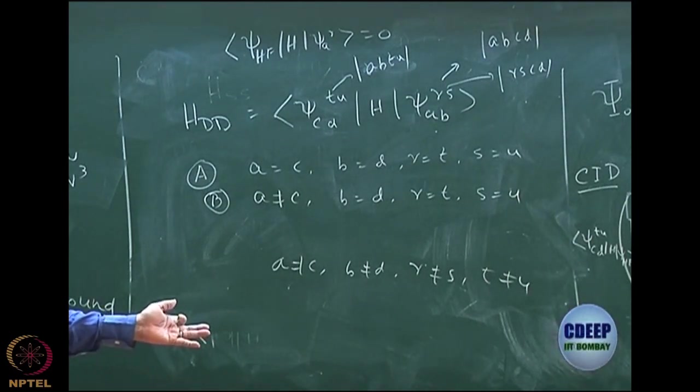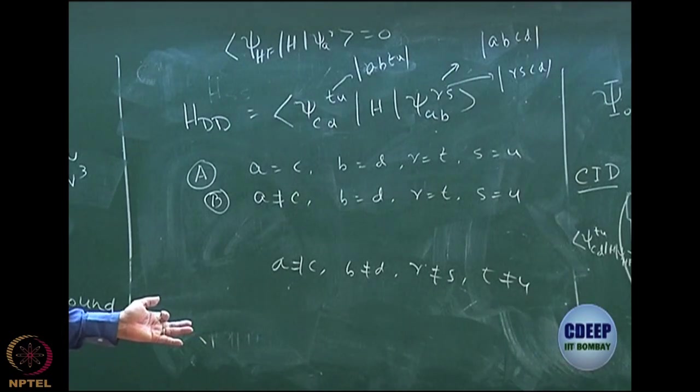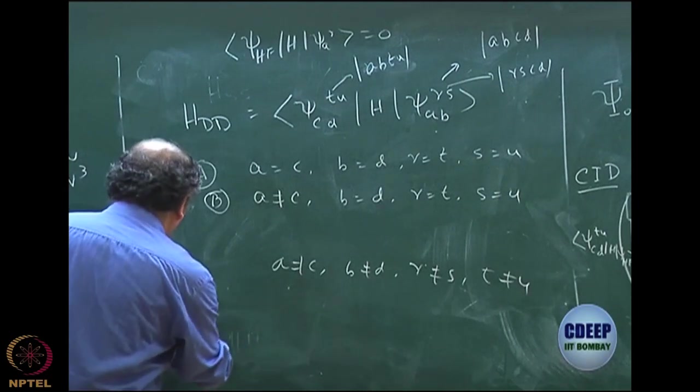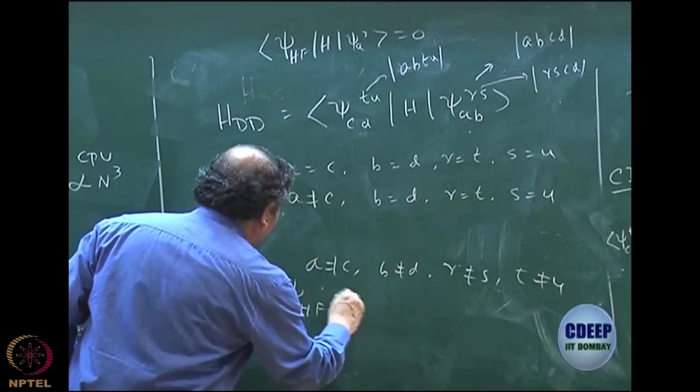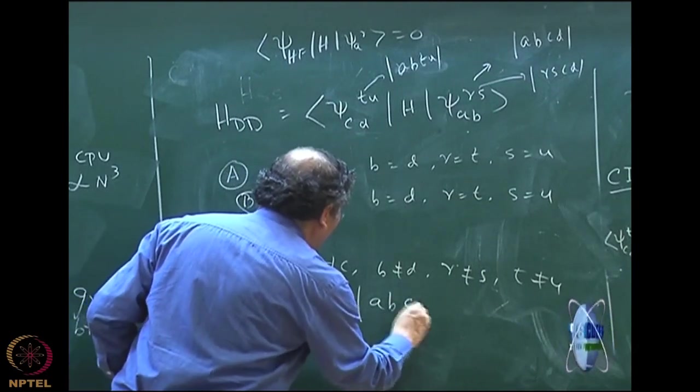It is a 4 occupation difference. I hope you can see. I am taking a simple 4 electron problem, where my psi Hartree-Fock is AB, CD, these are the spin orbitals.